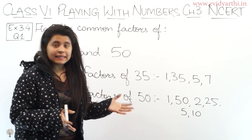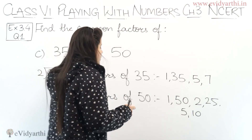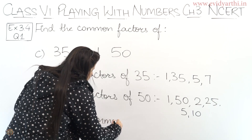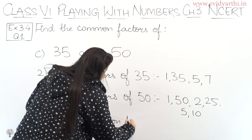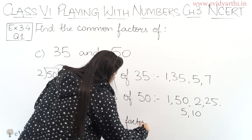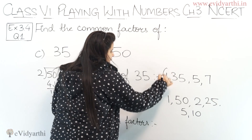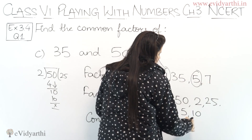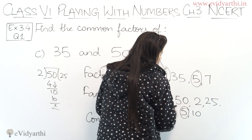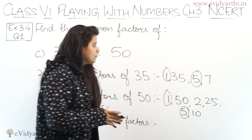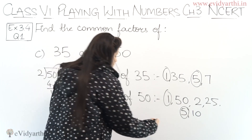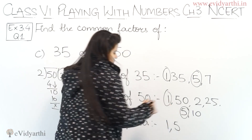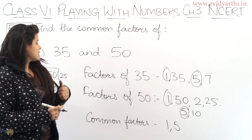There are no other factors after this. So we have written the factors of 50. Now we have to write the common factors of 35 and 50. The common factors will be 1 and 5. So this was Part C.